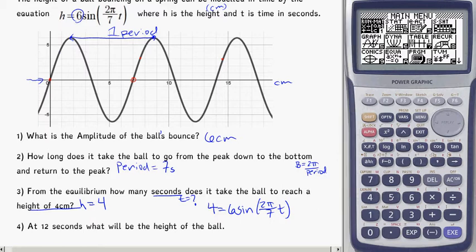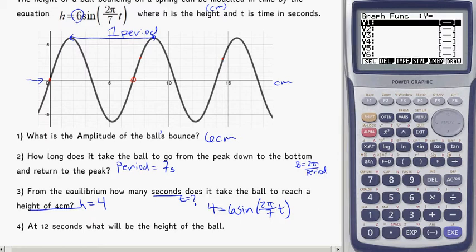So, I might just use the graph here, so I can get it plotted as well. 6 times sin bracket 2π divided by 7 times x. Remember, we're not going to use the letter t, we're just going to use that button right under the red one. And that should give me my equation.